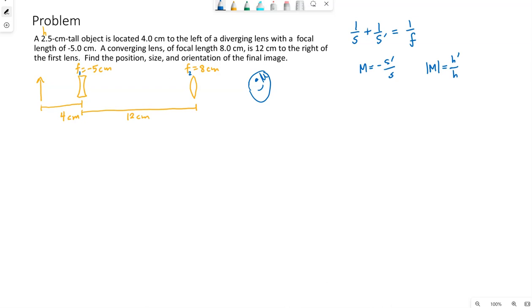When we have a two lens system, we find the image that lens 1 alone would create, and then we just treat that as the object for the second lens.